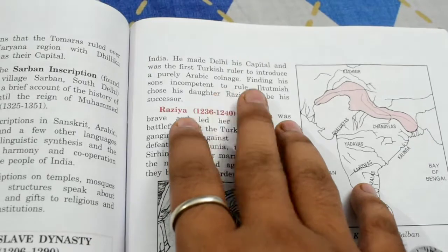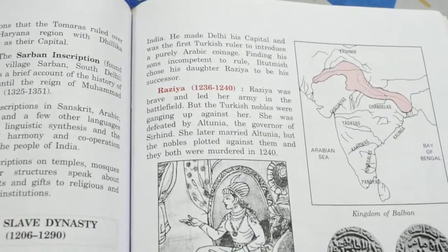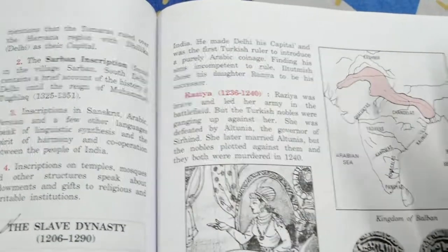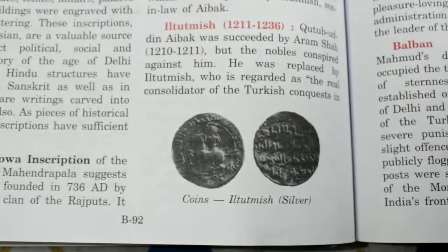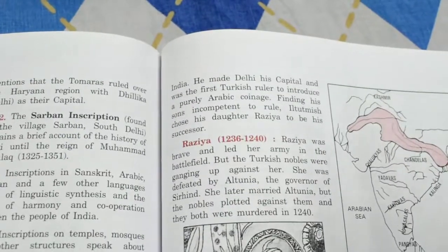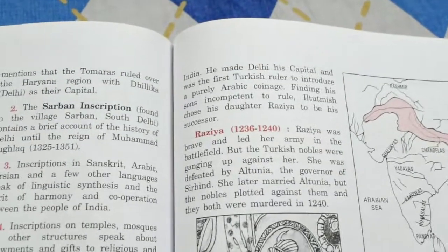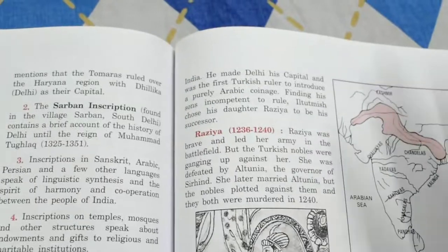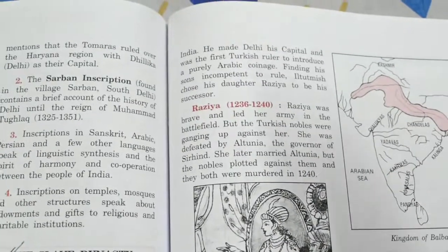Iltutmish was the first Turkish ruler to introduce purely Arabic coinage — previously Indian coins had Indian scripts, perhaps in Sanskrit or other local languages, but he brought in purely Arabic coinage. Because his sons were incompetent and he knew they could not maintain the empire he had painstakingly built, he left his kingdom to his daughter, Razia Sultan.